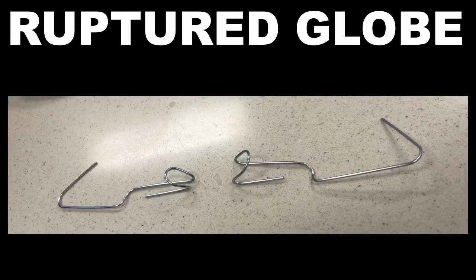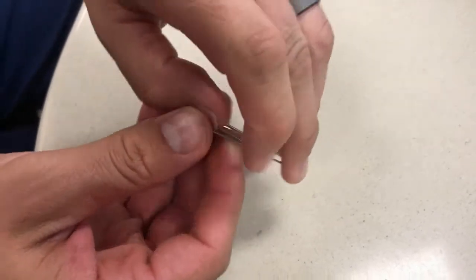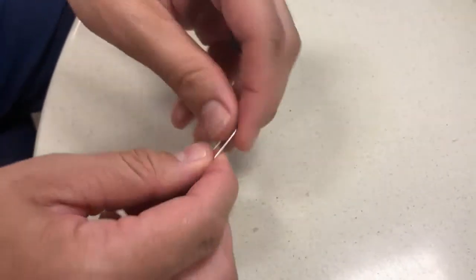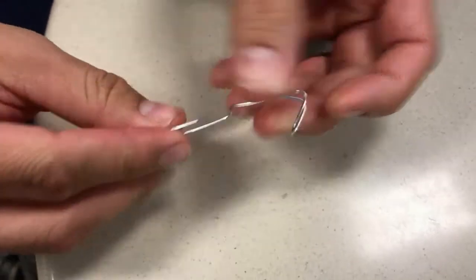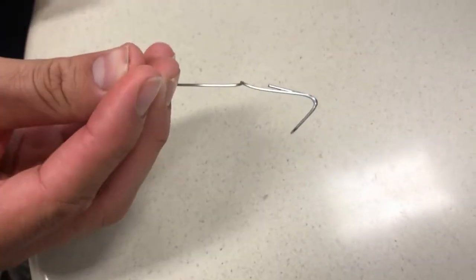For ruptured globe when the eye is swollen shut, one thing that works really well is the paperclip technique. You stick one end on the superior eyelid, another on the inferior eyelid, and just kind of pry it open. You open the paperclip, bend one end using the table to help, then open the back end to create a little handle. It's easy, works really well, and is much less painful for the patient than trying to use your fingers — because with your fingers you're actually pushing down into the eye. I appreciate your attention and I hope you have a good rest of your day.